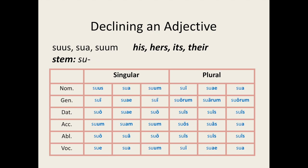Now let's look at how we would decline suus. We take the -a off the feminine nominative singular, which gives us the stem su. We then add all the appropriate endings.